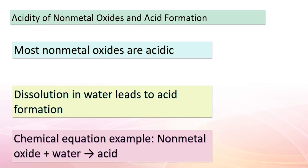Today's lesson delves into non-metal oxides and their role in creating acids. Most non-metal oxides exhibit acidity — when these oxides dissolve in water, they give rise to acids. For example, when carbon dioxide (CO₂) reacts with water, this reaction produces carbonic acid (H₂CO₃), which is a weak acid. Another example involves phosphorus pentoxide (P₄O₁₀) reacting with water to form phosphoric acid (H₃PO₄). This is an interesting chemical transformation where non-metal oxides play a crucial role in generating acids.